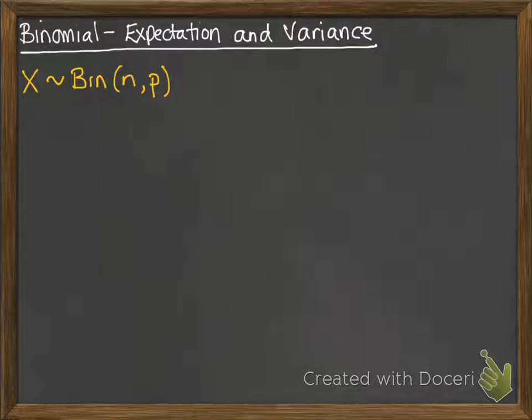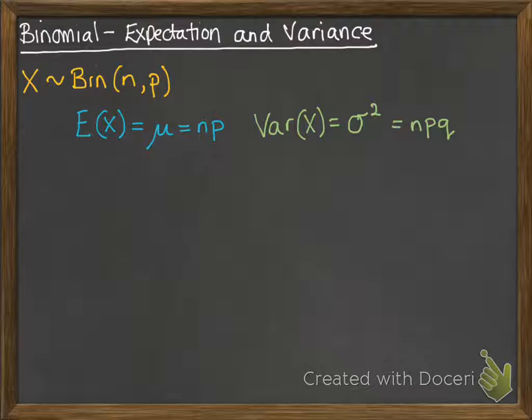We have a lovely little result here for the expectation of X. Remember, expectation is the same as mean. It's simply n times p. And the variance of X, which is sigma squared, is n times p times q.